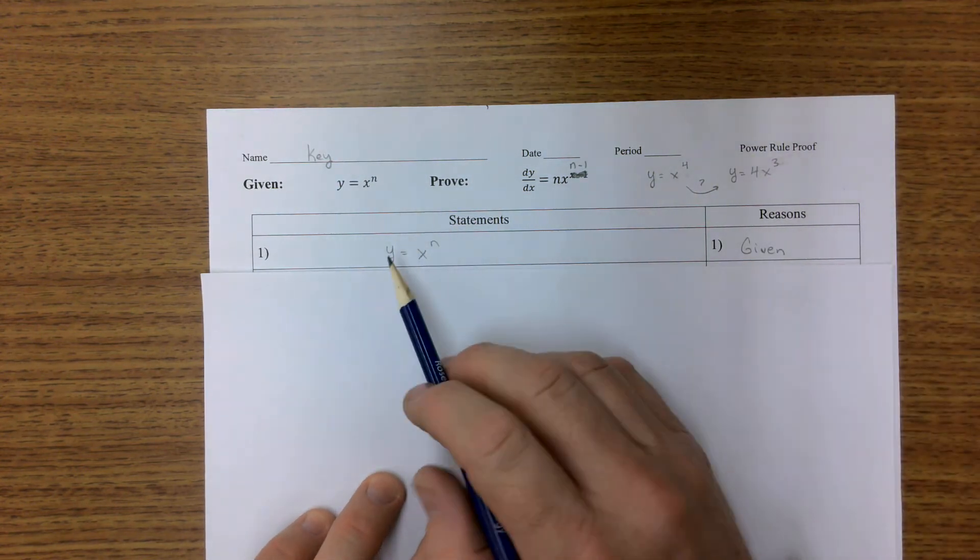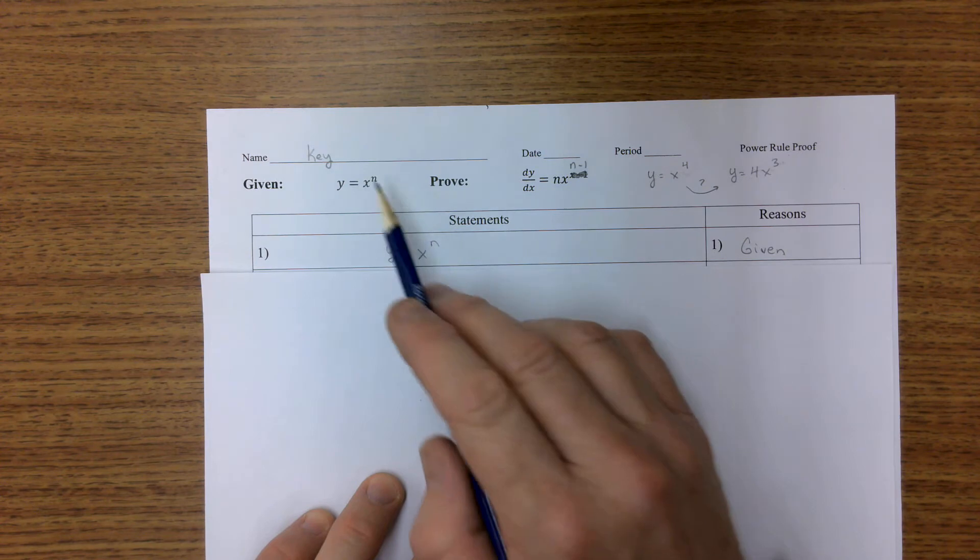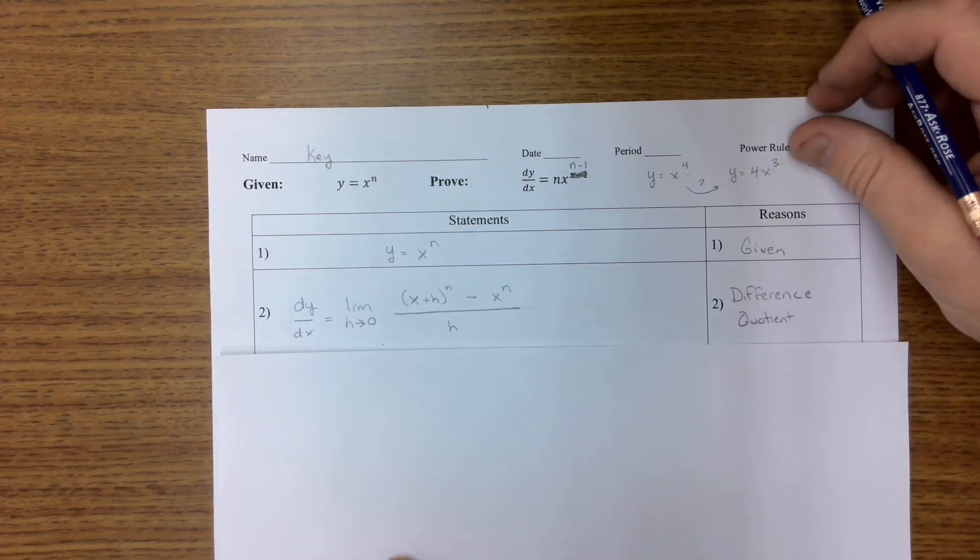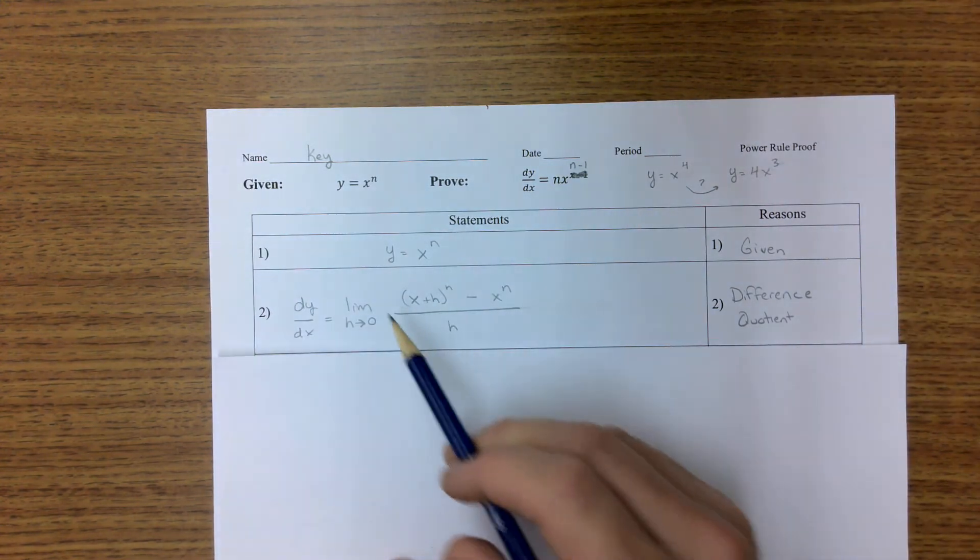So first step is that y equals x to the n, well that's given to us. And next step, if we want to find a derivative, we're going to use the difference quotient.